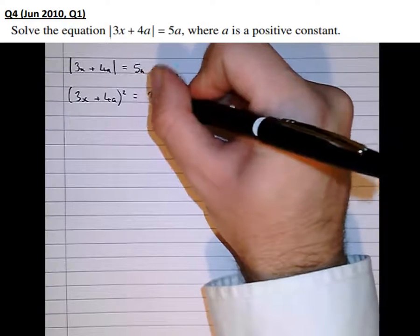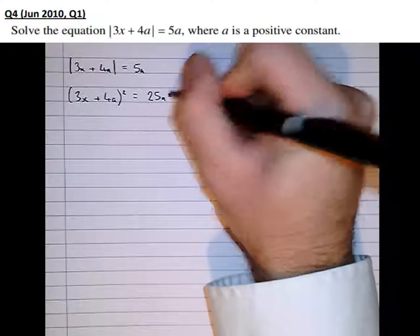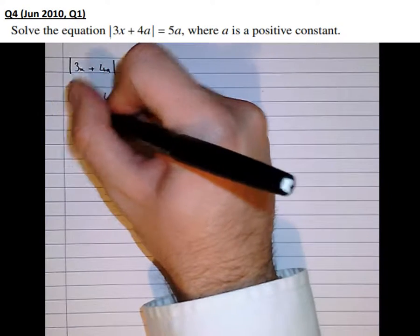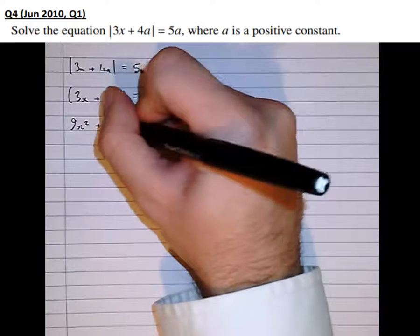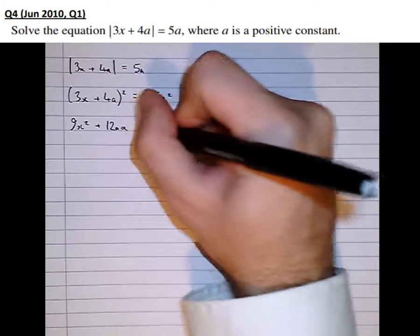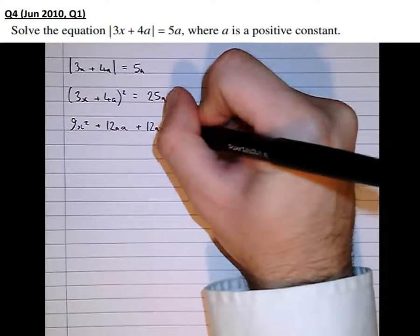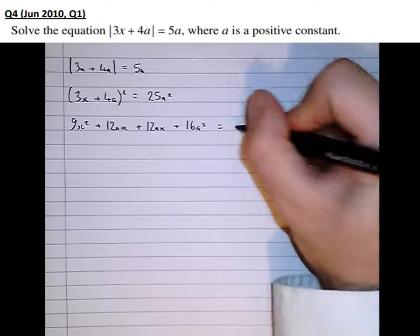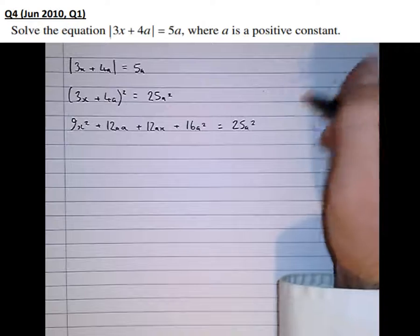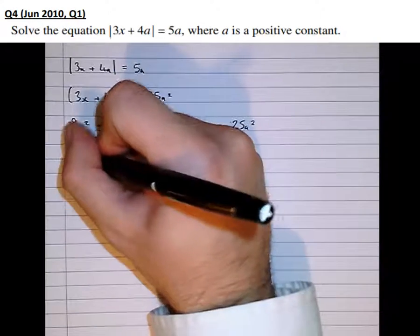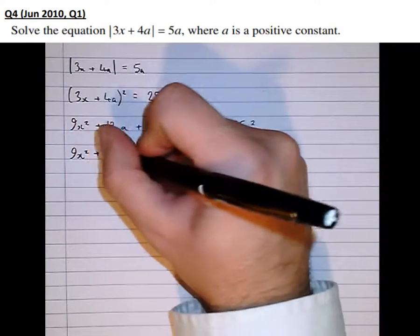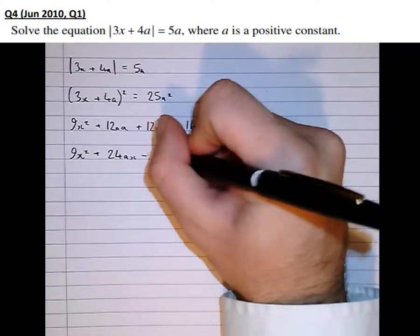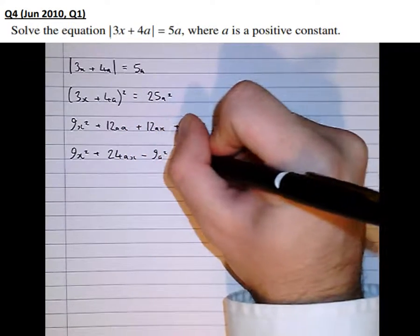5a times 5a is 25a squared. Multiplying out the brackets, we get 9x squared plus 12ax plus another 12ax plus 16a squared equals 25a squared. Then simplifying, 9x squared plus 24ax minus 9a squared equals 0.